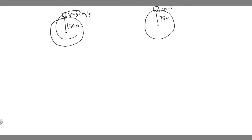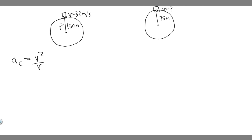So what we want to do is find the centripetal acceleration for the first curve, and then plug it into the second one in order to solve. The formula we're going to use is a_c, or the centripetal acceleration, equals v squared over r. We can calculate it with v and r, so we just plug in v squared, which is 32 squared over the radius, which is 150.